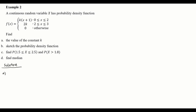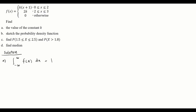To find the value of k, we use the property of the PDF: integrating from negative infinity to infinity, f(x) dx must equal 1. We draw a number line showing the intervals: between 0 and 2 the function is k(x+1), between 2 and 3 the function is 2k, and otherwise 0.